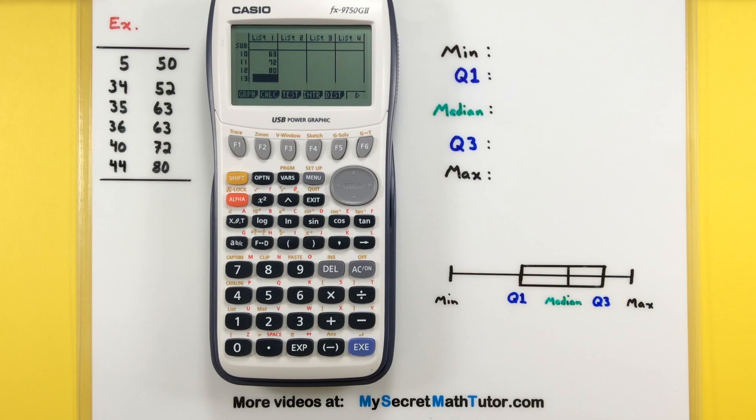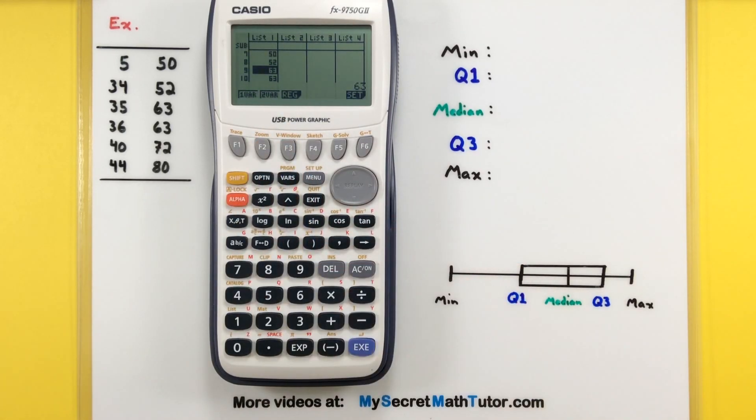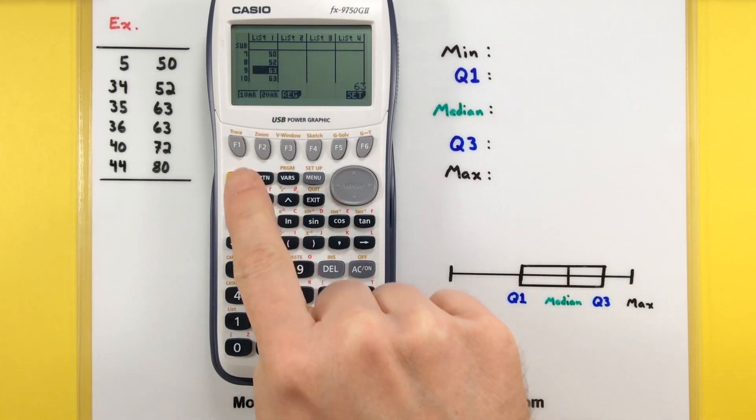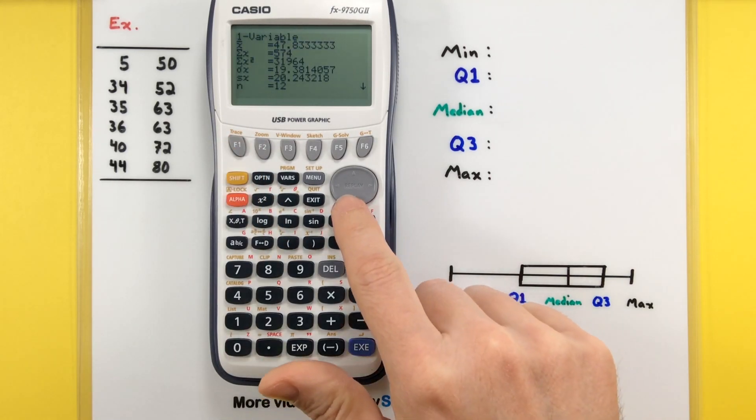Excellent. Looks like we have all of our data into the calculator and we're ready to move on to the next step. We want to go into calc, so that's under F2. This is a single variable, so we'll press F1.